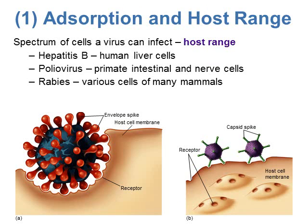The first step, absorption, involves what's called the host range — the spectrum of cells a virus can infect. Some viruses are very specific: hepatitis B will only infect human liver cells, a very narrow host range. Poliovirus must infect primate intestinal and nerve cells — still fairly specific. Rabies, however, can infect basically any cell type in any mammal, giving it a very broad host range. The spikes in the envelope help determine that host range by facilitating attachment.